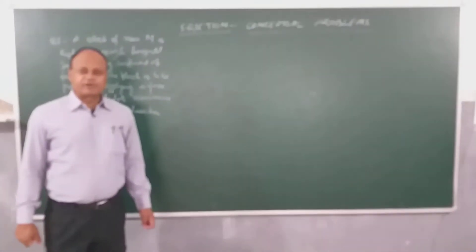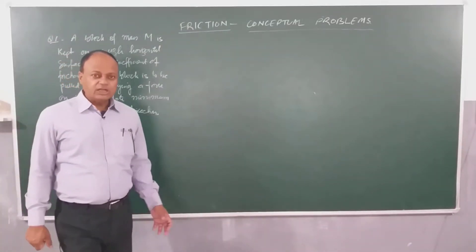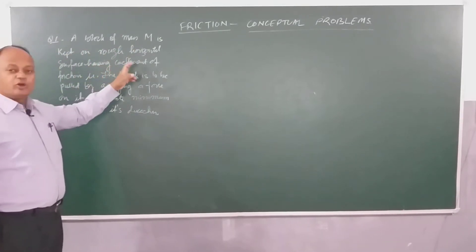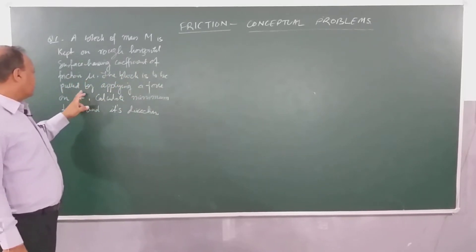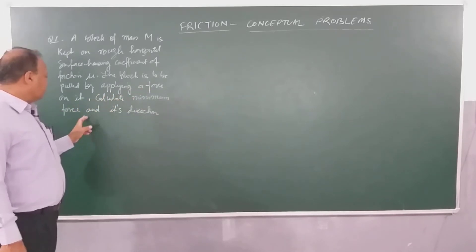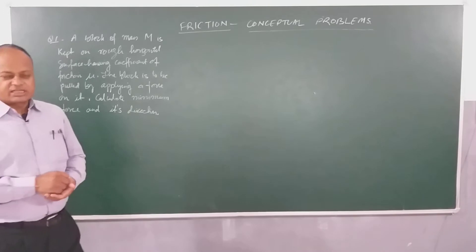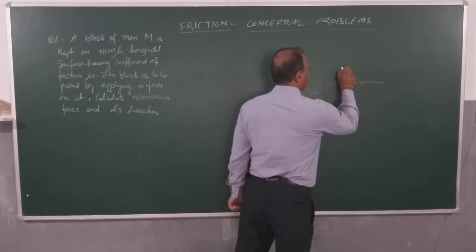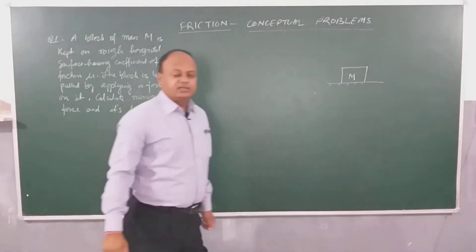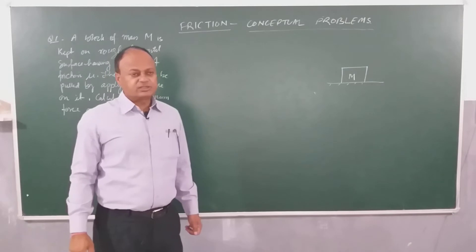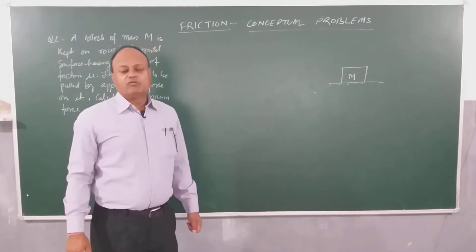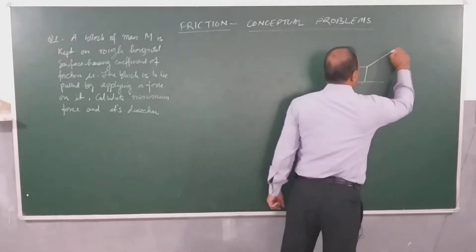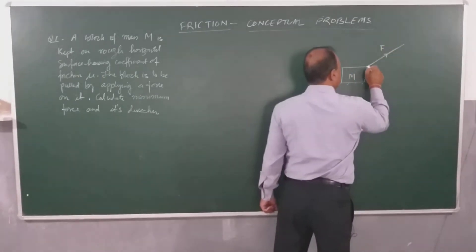We are going to discuss some graded problems in friction today. Here we have a simple problem on the board: a block of mass m is kept on a rough horizontal surface having coefficient of friction mu. The block is to be pulled by applying a force. Calculate the minimum force and its direction. I'll assume the force is F acting at angle alpha with the horizontal.